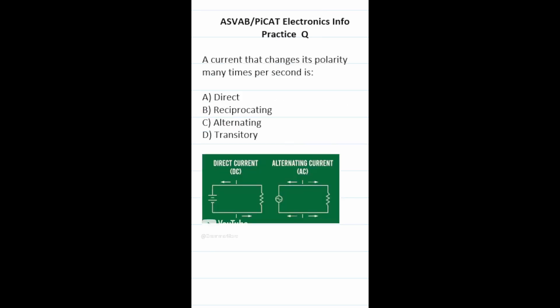Practice test question: a current that changes its polarity many times per second is? For the ASVAB and PyCat you have to know the difference between direct current, which only goes one direction, and alternating current, which changes its direction or polarity many times per second. So this one is going to be C, alternating current.